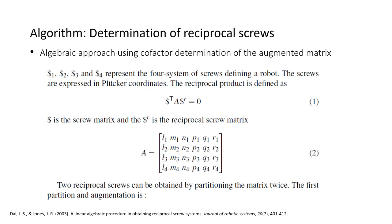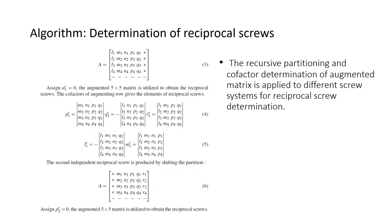Suppose we have a four system of screws defining a robot. The screws are expressed in Plucker coordinates and assembled as row vectors. The matrix is partitioned into a 5-column submatrix and 1-column submatrix and then augmented. Zeros are assigned to one element of the reciprocal screw corresponding to the second submatrix. The co-factors of the augmenting row give the elements of reciprocal screws. The second independent screw can be produced by shifting the partition to the right and repeating the procedure. This procedure is utilized for finding reciprocal screws from 5, 4, 3 and 2 systems found in robo-manipulators and mechanisms.